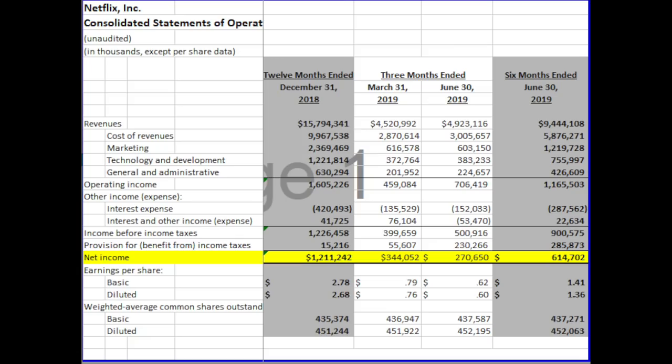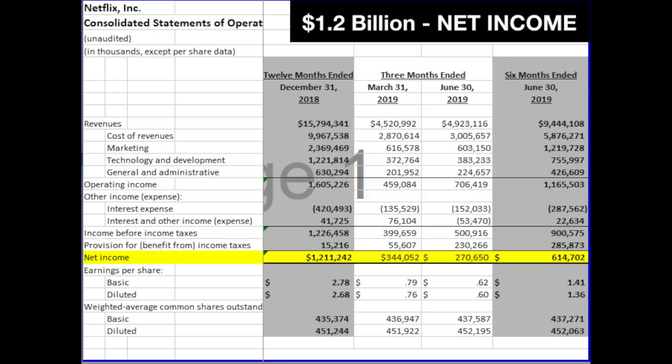Let's define reported earnings. You can find reported earnings at the bottom of the income statement — they are what the company makes after deducting all accounting expenses from revenues. In this case, Netflix for 2018 had net income of $1.2 billion. We'll use that to compare and see what the actual owner's earnings are for Netflix.